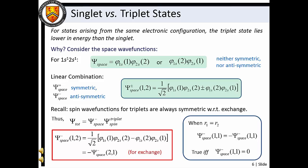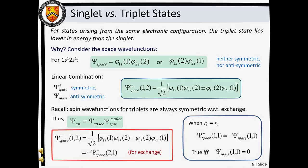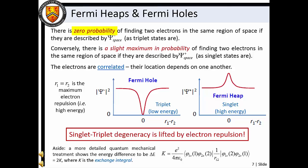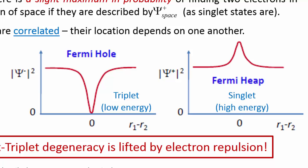Recall that the spin wave functions for triplets are symmetric with respect to electron exchange. Since the electrons are fermionic particles, we must pair the triplet spin wave function with the anti-symmetric spatial wave function to satisfy the Pauli exclusion principle. So, electron exchange changes the sign of the triplet spatial wave function. But think about what this means as the two unpaired electrons approach one another. If we could somehow squeeze both electrons into exactly the same spatial position, the spatial wave function would equal the negative of itself. This can be true if and only if the value of the spatial wave function is zero under this condition. There is therefore zero probability of finding two electrons in the same region of space if they are described by an anti-symmetric spatial wave function. This probability dip is known as a Fermi hole.